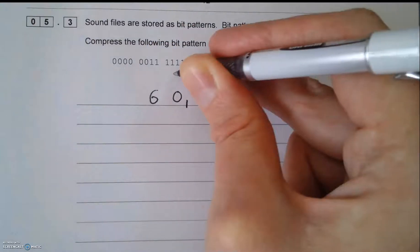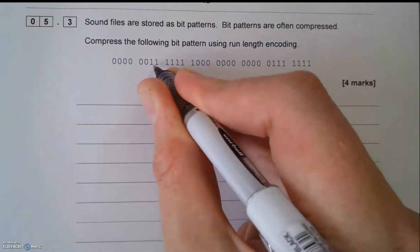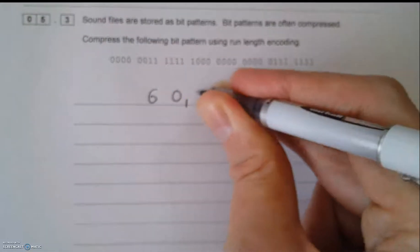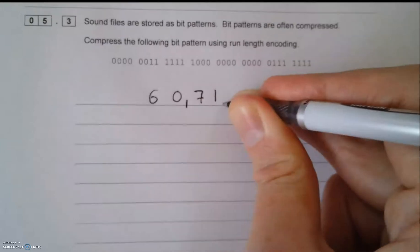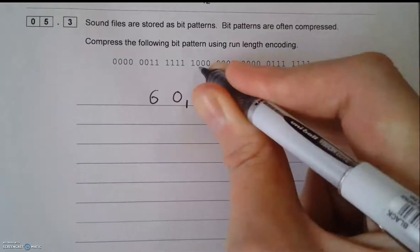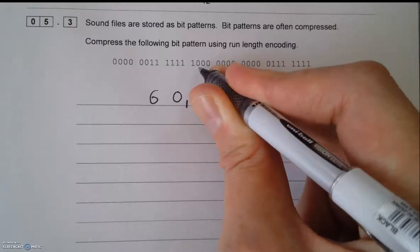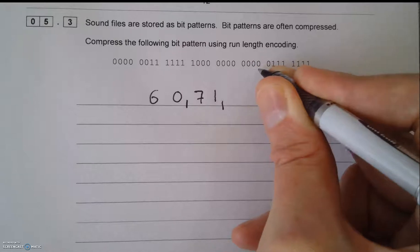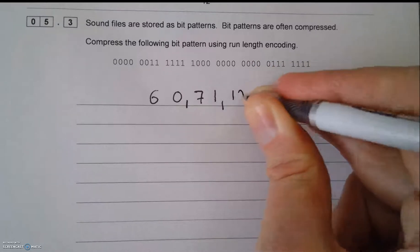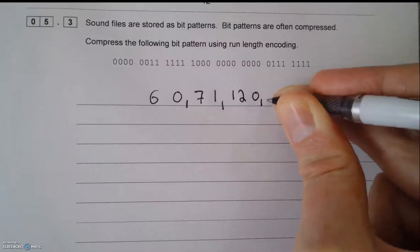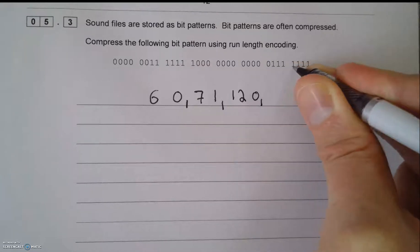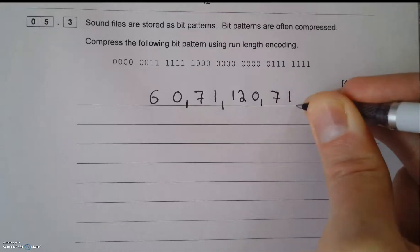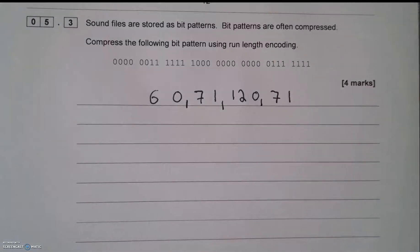Now let's look at the ones. I've got one, two, three, four, five, six, seven - seven ones. Now I'm back to zeros: one, two, three, four, five, six, seven, eight, nine, ten, eleven, twelve - twelve zeros. And number of ones: one, two, three, four, five, six, seven - seven ones. And that's my answer for four marks.